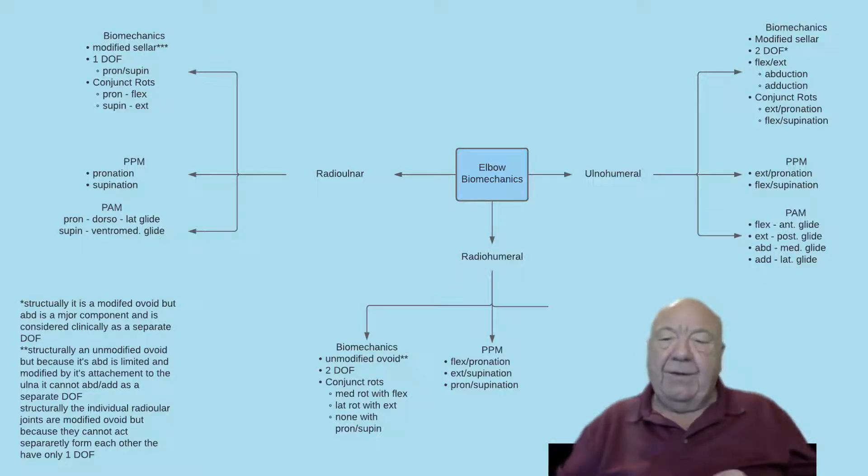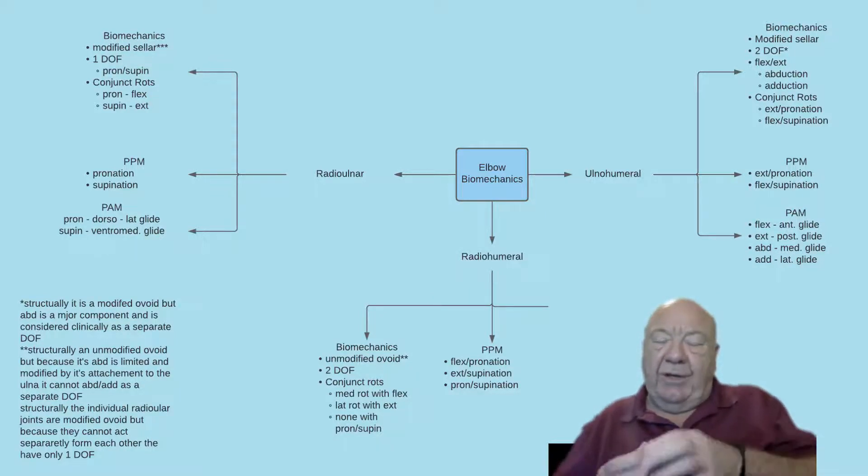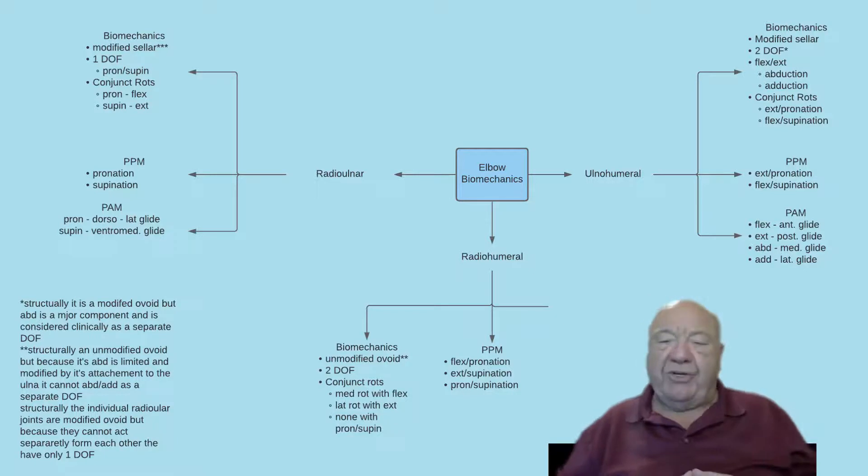The conjunct rotations of this is, for flexion at the radial humeral joint, you have to do pronation with the flexion in order to get the radial head as far up the capitellum as it can go. So the full range of motion test is flexion-pronation and extension-supination.